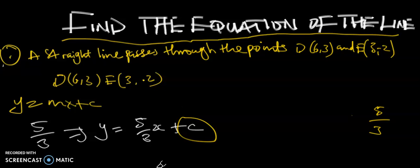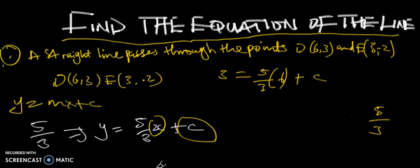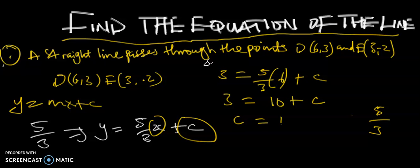We need to find the constant c. Using the first point D (6, 3), y = 3 and x = 6. So: 3 = (5/3) × 6 + c. Five over three multiplied by six gives 10, so 3 = 10 + c. Therefore c = 3 − 10, which equals −7.